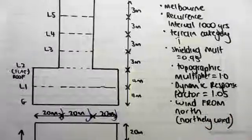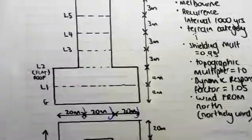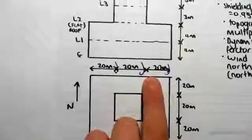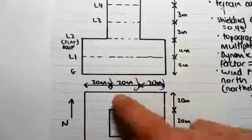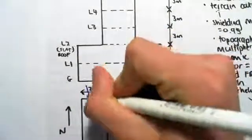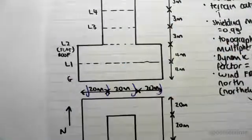So here's our plan. That's the north direction, so I've drawn in blue the fact that the wind's coming down that way. It's coming from the north, so it's coming like this.